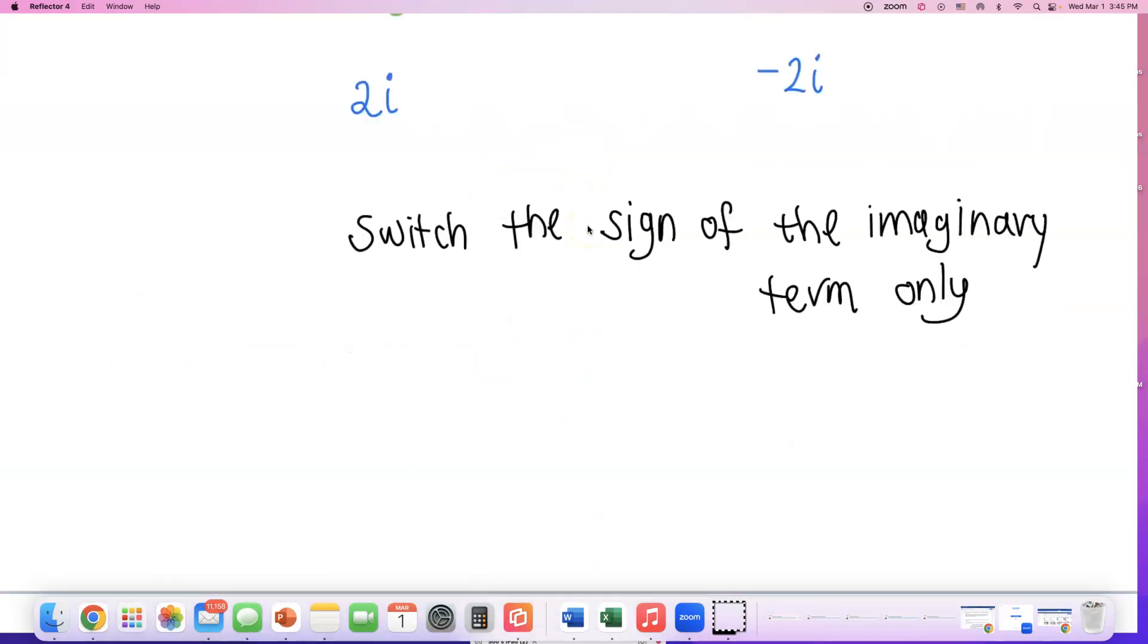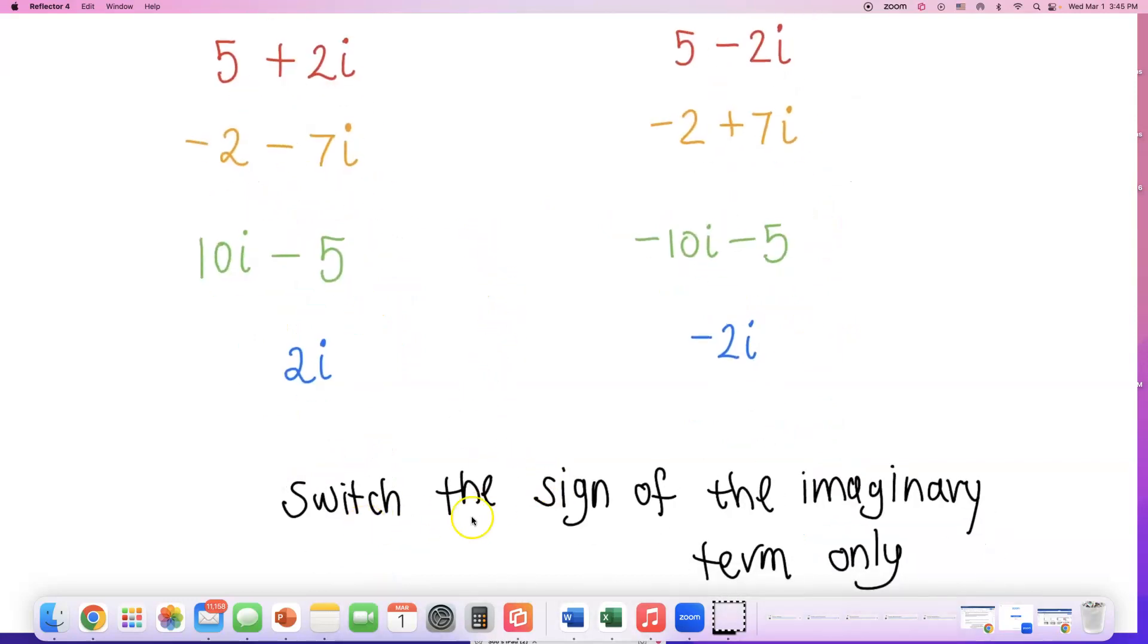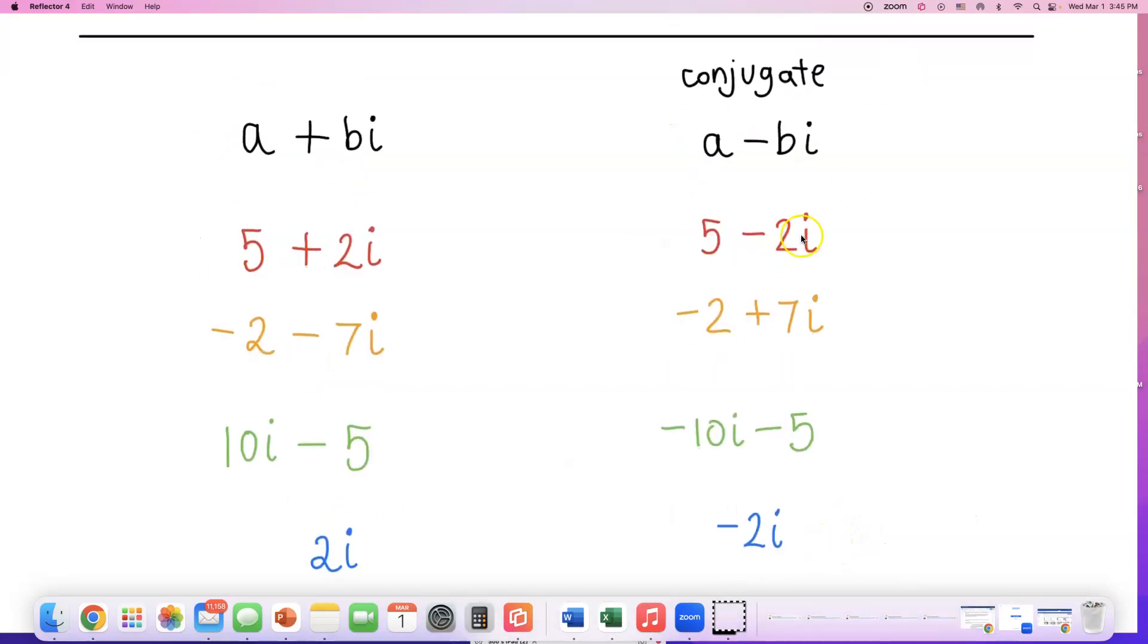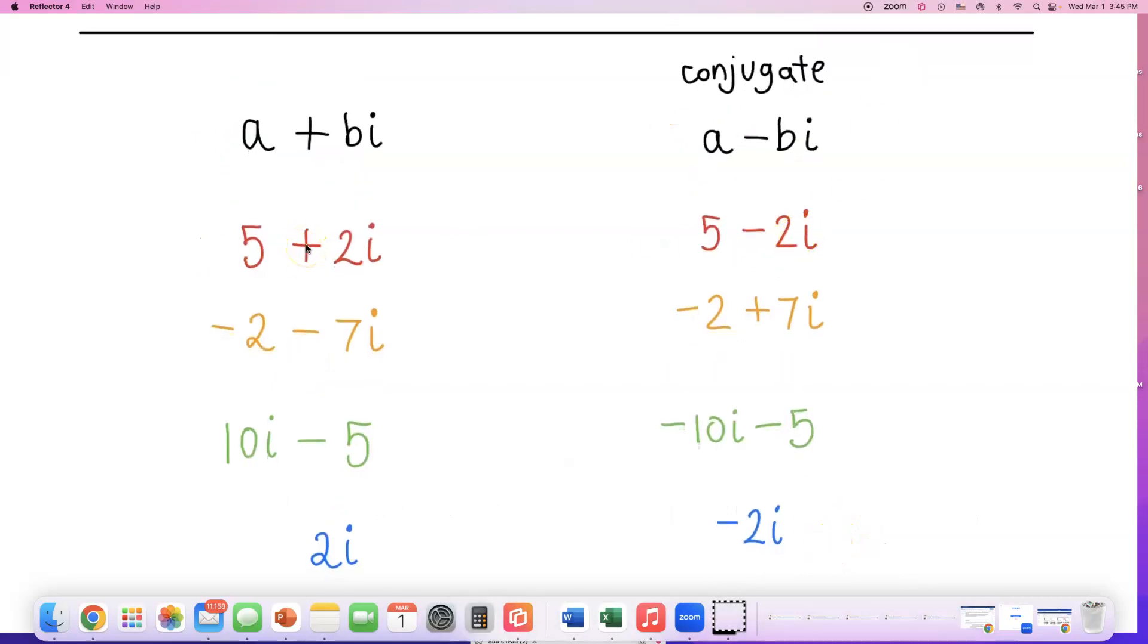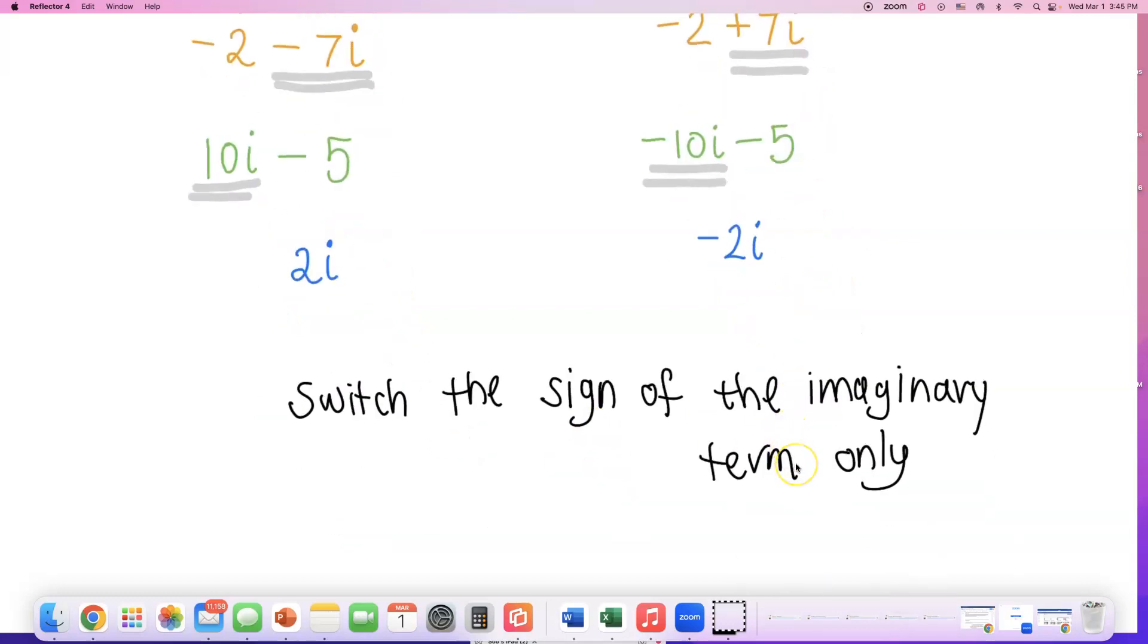In class, we talked about how to write conjugates. You just switch the sign of the imaginary term only. Anytime you have a term that has i, like 2i, you switch it to negative 2i. If you had minus 7i, you switch it to plus 7i. If you have positive 10i, you switch it to negative 10i, but you only switch the sign of the imaginary term.